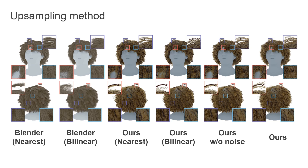Here we ablate our proposed method and compare it with a strand-based upsampling baseline implemented in Blender, a popular computer graphics software. We see that strand-level interpolation produces grid-like artifacts like hair clumping or loss of the original hair structure, especially for curly hairstyles. At the same time, both nearest and linear upsampling in the latent space already leads to more plausible results, which are further improved by combining these two approaches and adding noise to produce more realistic renders.